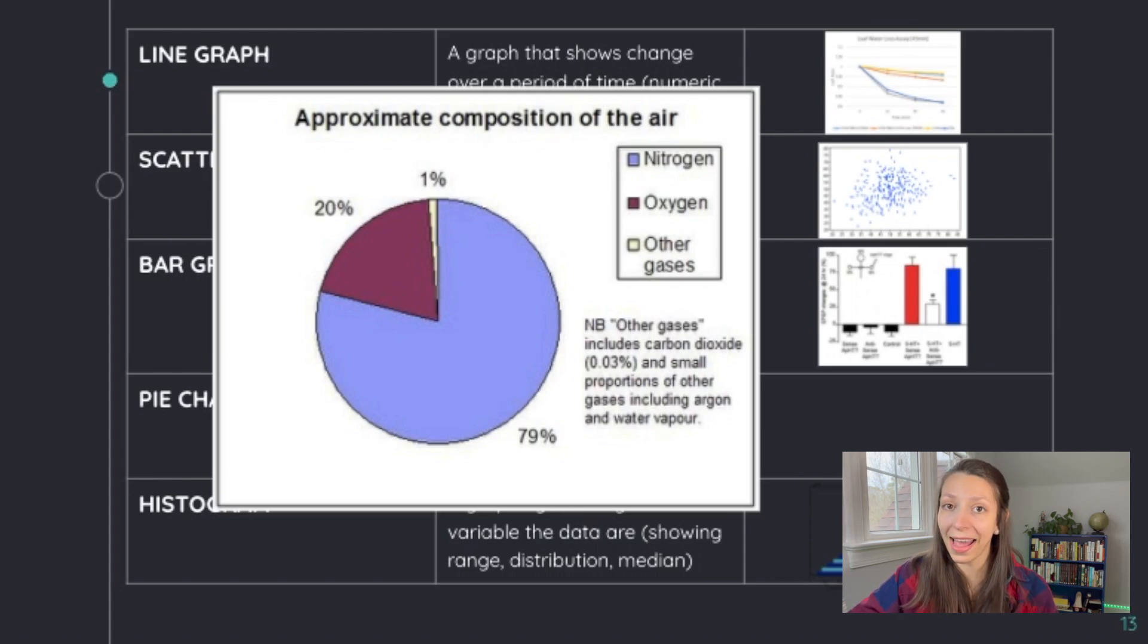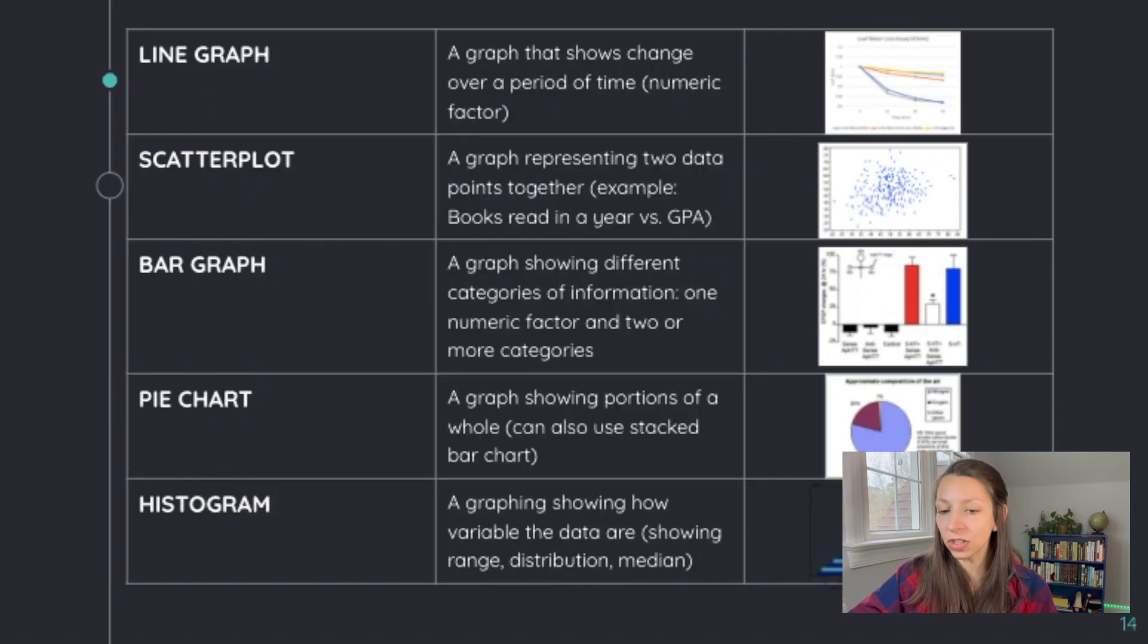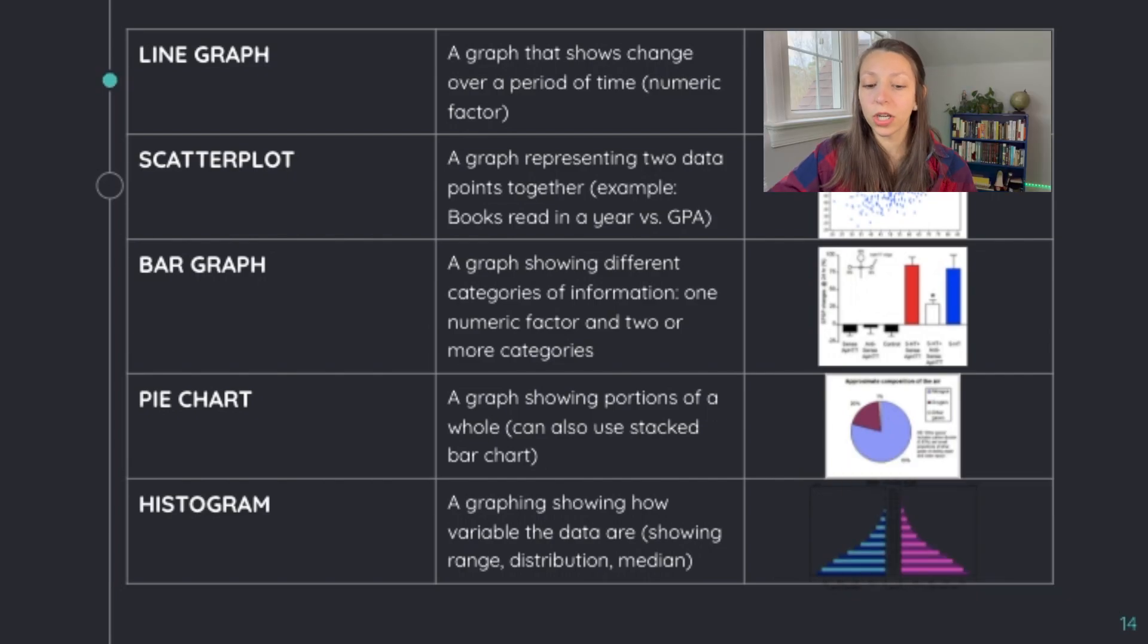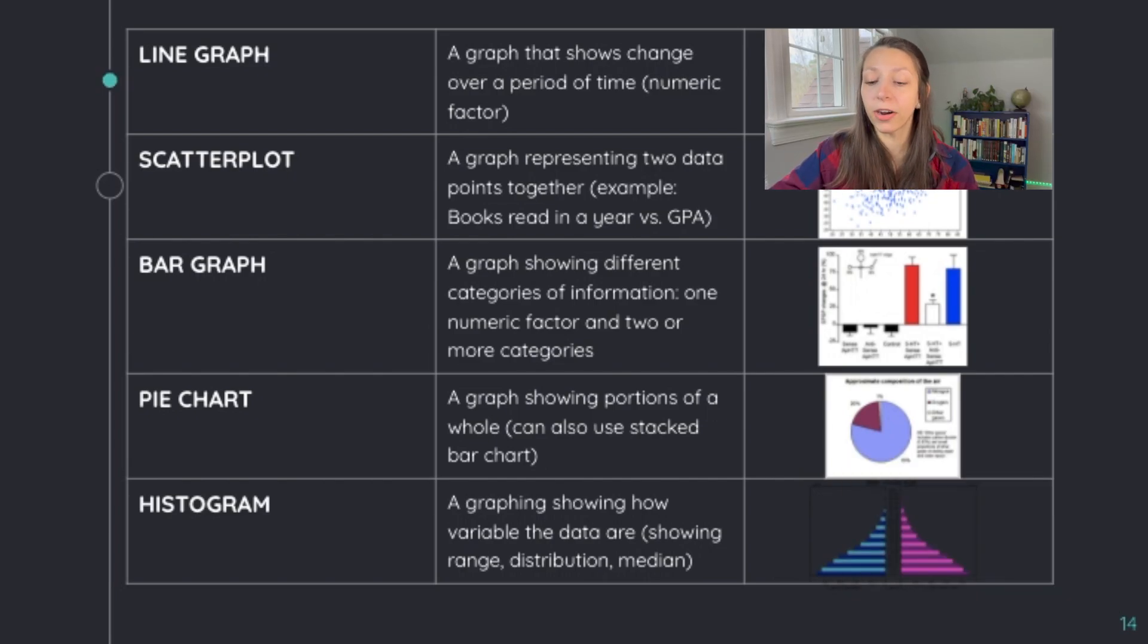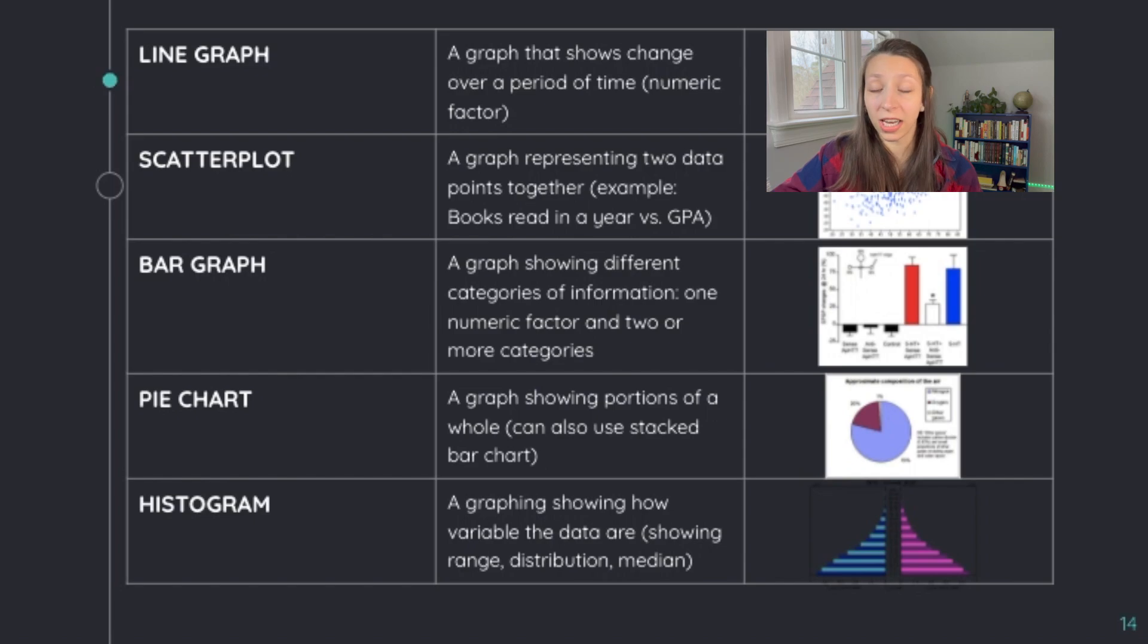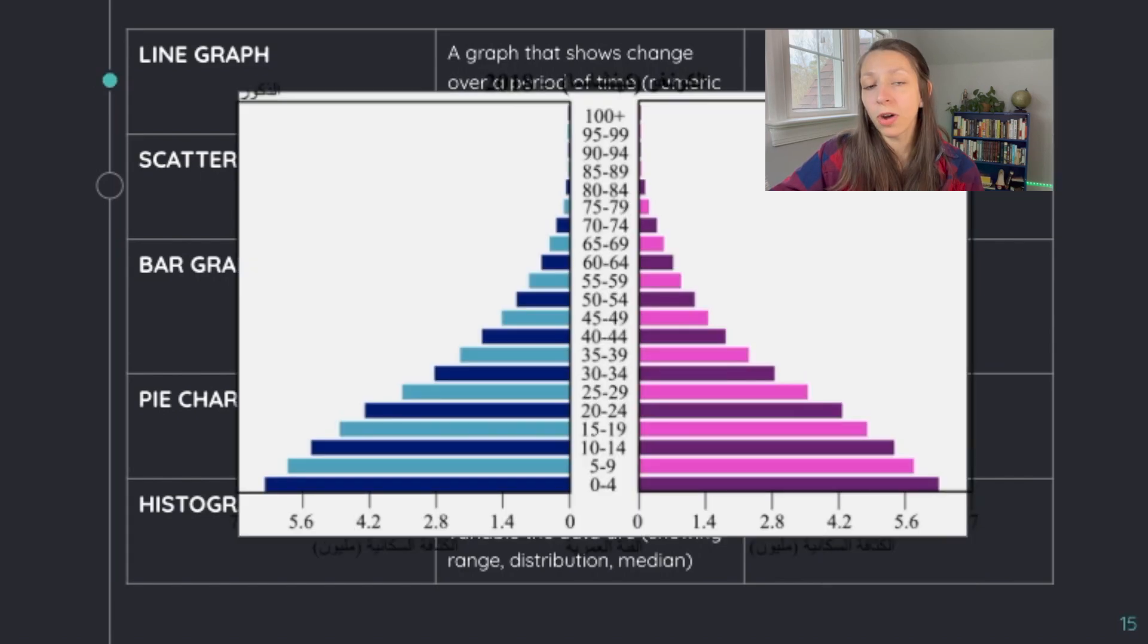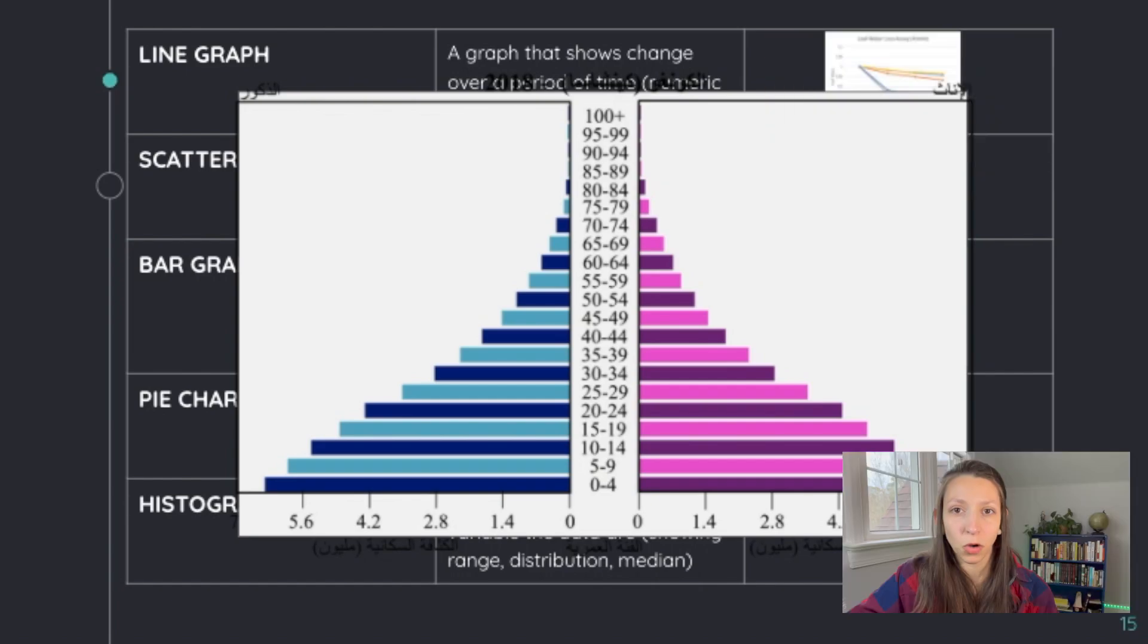Notice all the sections of the pie add up to 100%. A histogram is a graph that sometimes can look like a bar chart that is squished together. But usually we're going to use a graph like this to show how variable the data are. We can be looking at range, distribution, or mean. You've probably seen a histogram before if you've ever looked at population graphs or population charts, where we see the frequencies or the numbers of males and females in different age groups in a particular country. This is a population chart for the DRC.